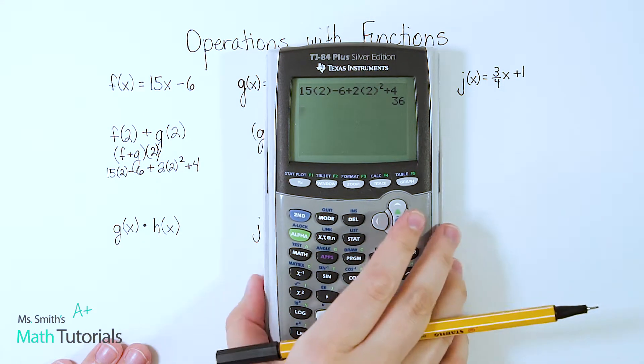So now we've eliminated all variables in there. So we should get a nice whole number. So I can actually just put this straight into my calculator, which is exactly what I'm going to do. So I don't have to think about PEMDAS too much. So I would just do 15 times 2 minus 6 plus 2 times 2 squared plus 4. And I should get 36. Nice whole number.